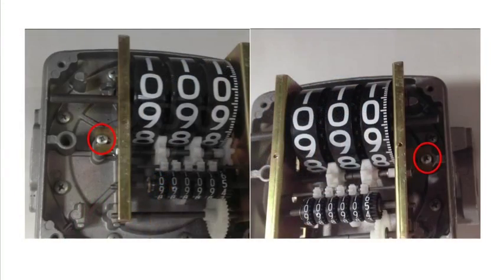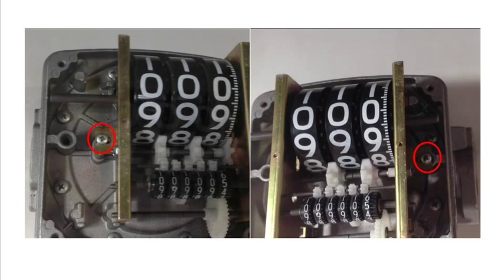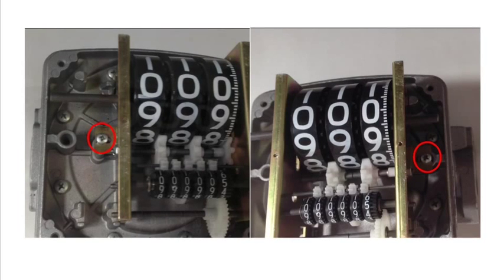You will notice that there are two screws holding the counter assembly to the body of the meter, marked here in red.